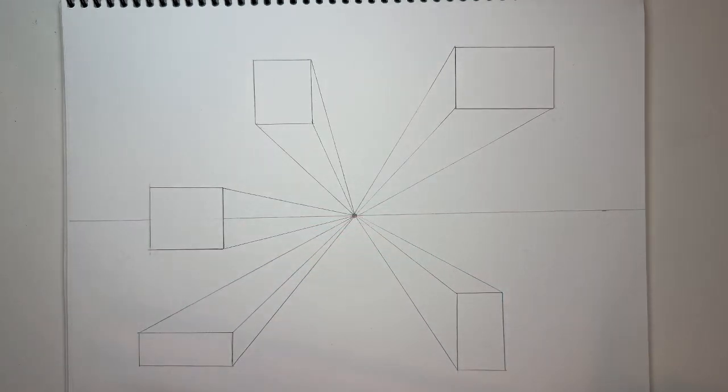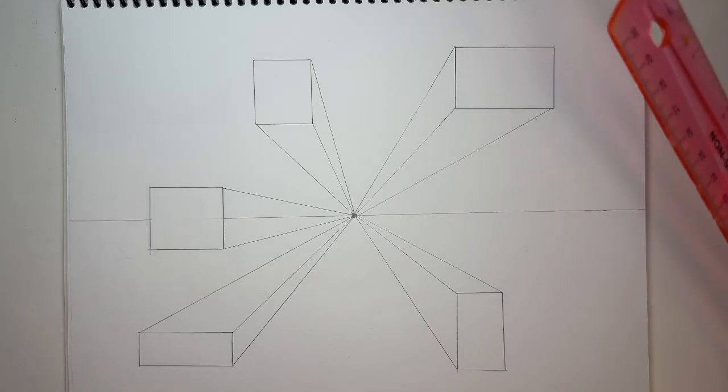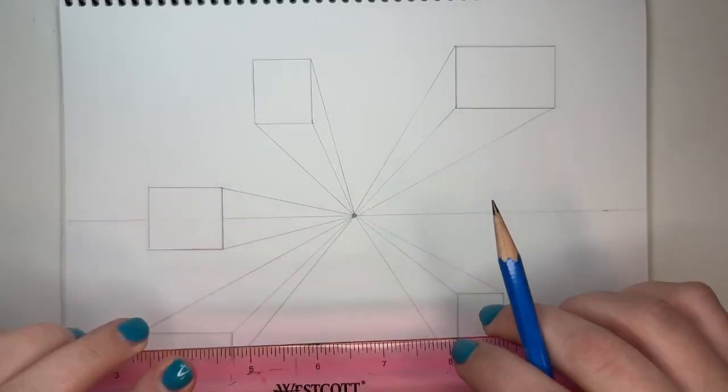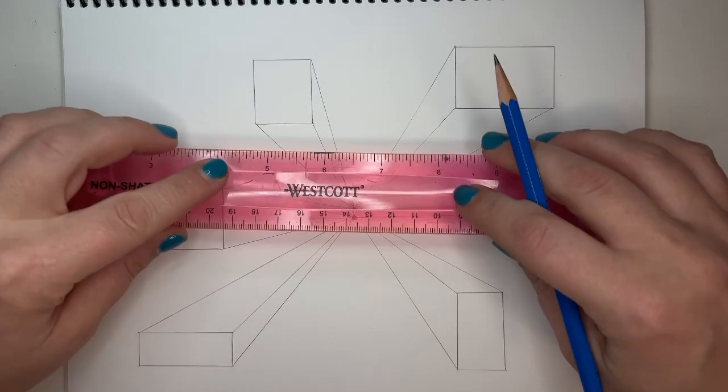So with your ruler, we're going to be making some parallel lines, and we're only going to be making vertical or horizontal lines. That's the most important thing to keep in mind. So what I like to do, you can decide how big you want these forms as well.